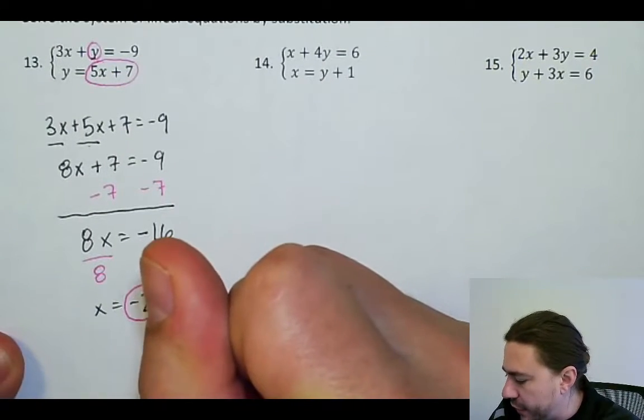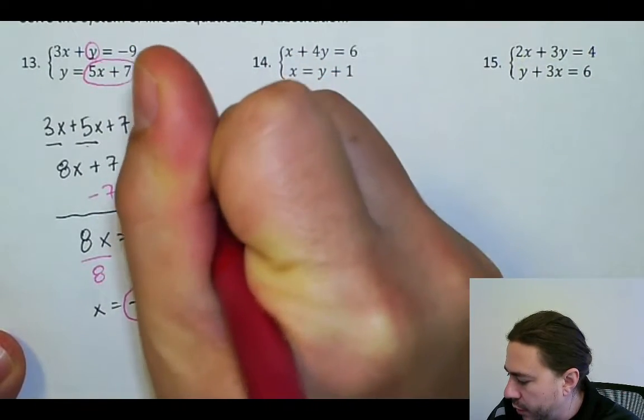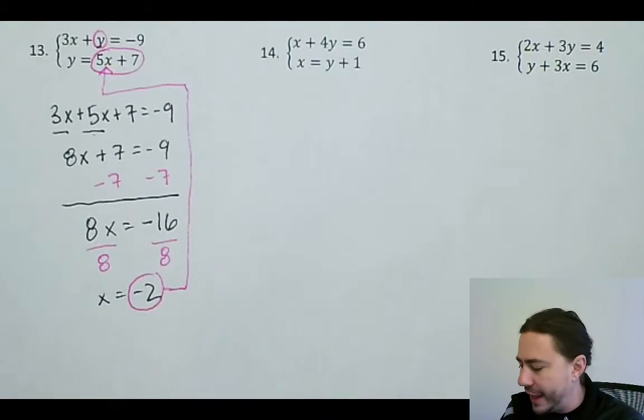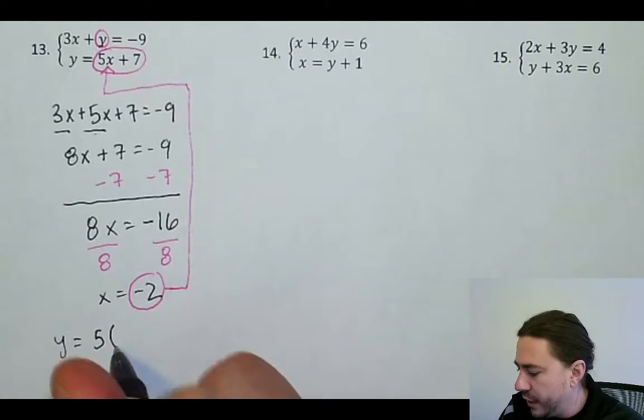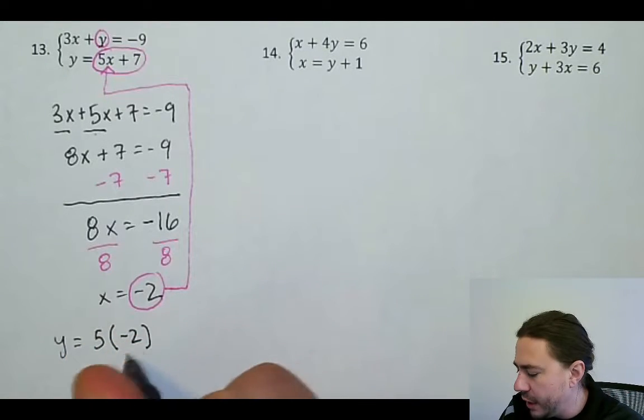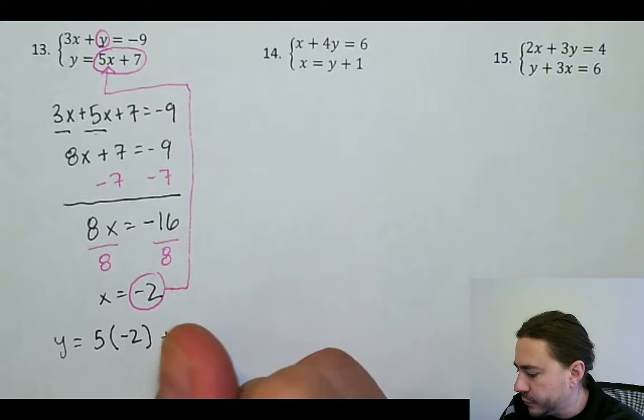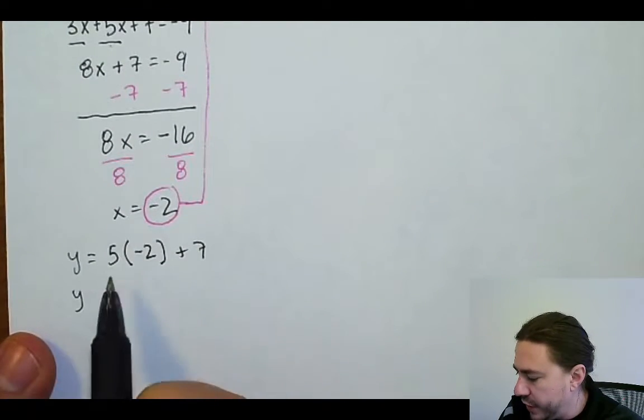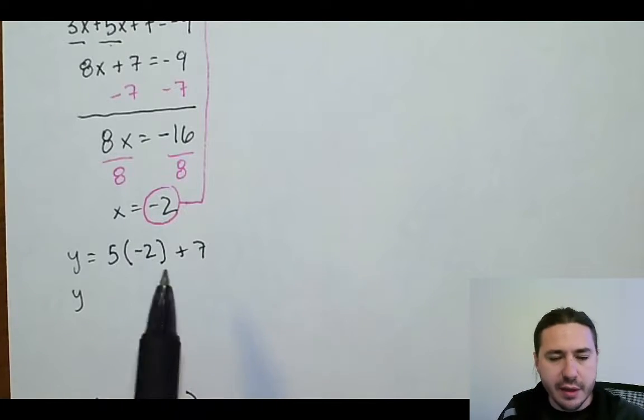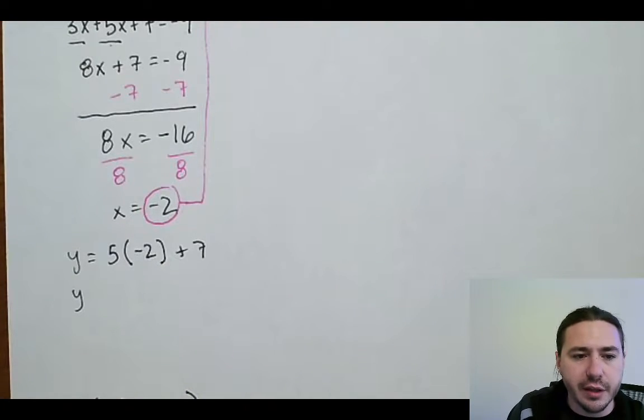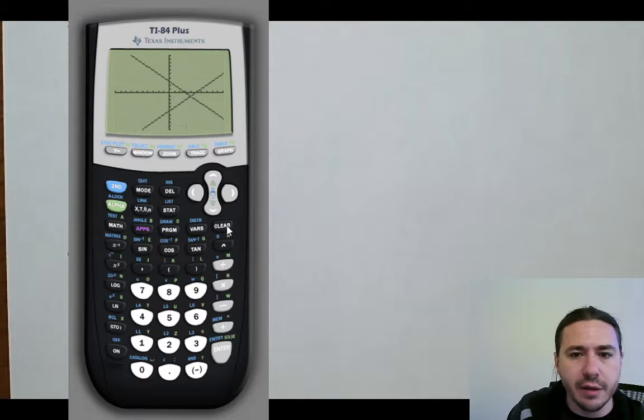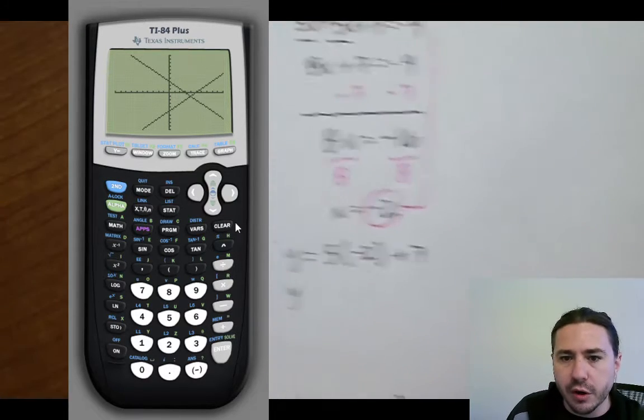So I'm going to take this negative 2 and substitute it into x right there. So I'm going to rewrite that second equation as y equals 5 times, instead of x, I'm going to write negative 2. So 5 times negative 2 is negative 10 plus 7 is negative 3. Let's double check that. Good idea to, let's clear that out. Just a good idea to double check your work here.